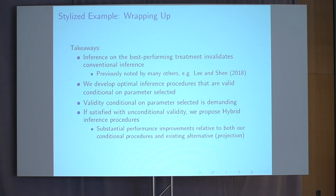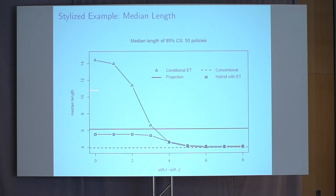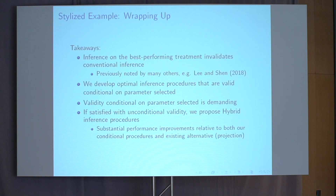That wraps up the stylized example. Key takeaways: inference on the best-performing treatment in an experiment invalidates conventional inference procedures — trying 50 things and focusing on the best leads to systematic bias and undercoverage. To address this, we develop optimal inference procedures valid conditional on the parameter selected. But conditional validity is quite demanding — the conditional confidence interval is quite long when all treatments are of roughly similar effectiveness. So if we're satisfied with unconditional validity, we propose hybrid inference procedures, which offer substantial performance improvements relative to both conditional procedures and the existing alternative — projection.